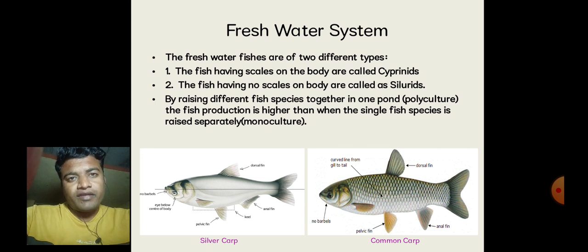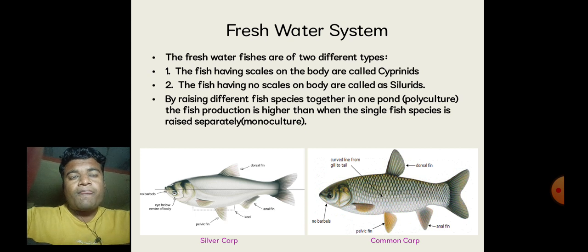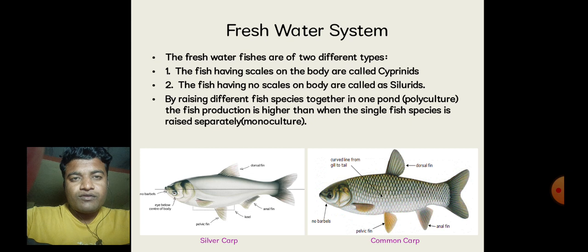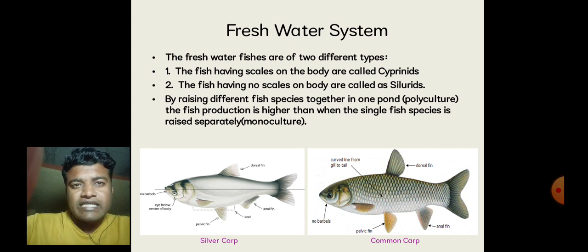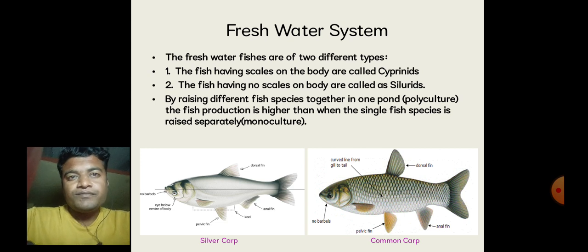By raising different fish species together in one pond, that technique is known as polyculture. The fish production is higher than when a single fish species is raised separately, which is monoculture. In the figure, Silver Carp has no scales on the body — that is a Silurid fish — and Common Carp has more scales over the body surface, known as a Cyprinid fish.